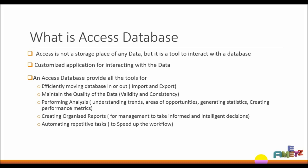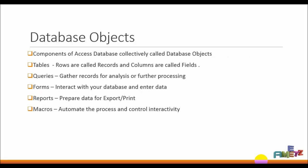Now we have database objects, and we need to understand this. This is very important because this is the basic step for getting into an Access database. The components of an Access database are collectively called database objects — that is: tables, queries, forms, reports, and macros.